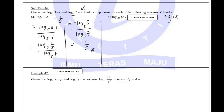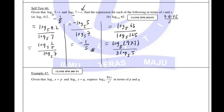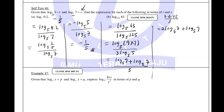The second one: change the base to base 5 as well. 63 stays on top, 125 stays down. 63 is 9 times 7. 125 is 5 to the power 3. This becomes log base 5 of 9 plus log base 5 of 7, all over 3. Now 9 is 3 squared, so log base 5 of 9 is 2T. Log base 5 of 7 is S. The answer is 2T plus S over 3.